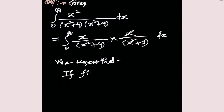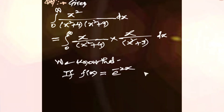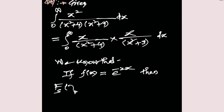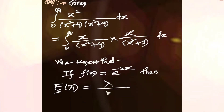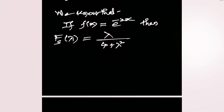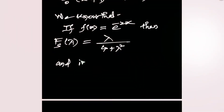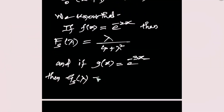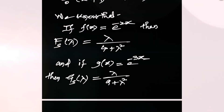If f(x) equals e raised to minus 2x, then its Fourier sine transform is lambda upon (4 + lambda²). If g(x) equals e raised to minus 3x, then its Fourier sine transform is lambda upon (9 + lambda²). These are standard results.